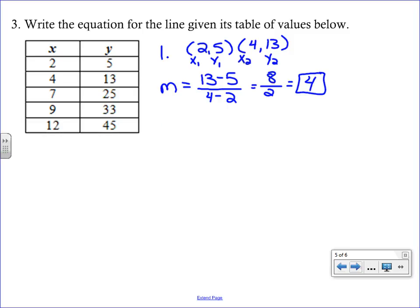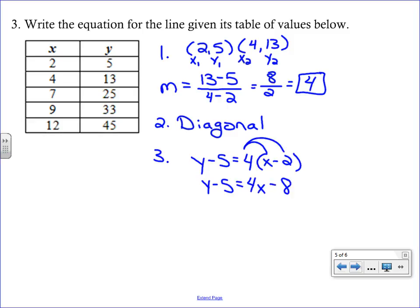A slope of 4 tells us that we have a diagonal line. Seems to be the popular choice here today. So we start with point slope form. Y minus 5, hopefully you have that written down from your previous examples, equals 4 times (x minus 2). We just plugged in the x1, y1, and the slope. We're going to bring down the left-hand side while distributing on the right-hand side. Last up, add 5 to both sides and simplify. So y equals 4x minus 3.